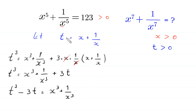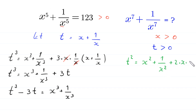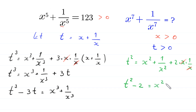Now if we square both sides of the equation t equals x plus 1 over x, we get t squared equals x squared plus 2 times x times 1 over x. The x cancels out. Moving 2 to the left, we get t squared minus 2 is equal to x squared plus 1 over x squared. Let's call the first result equation 1 and this result equation 2.